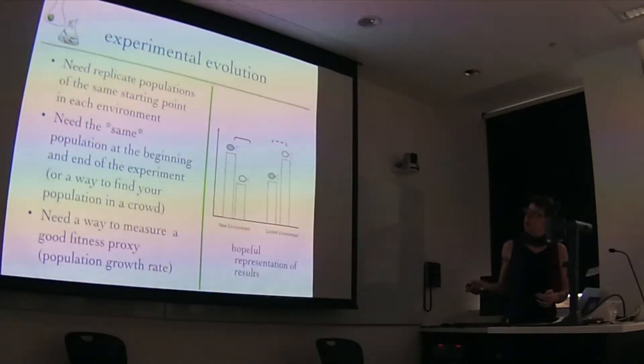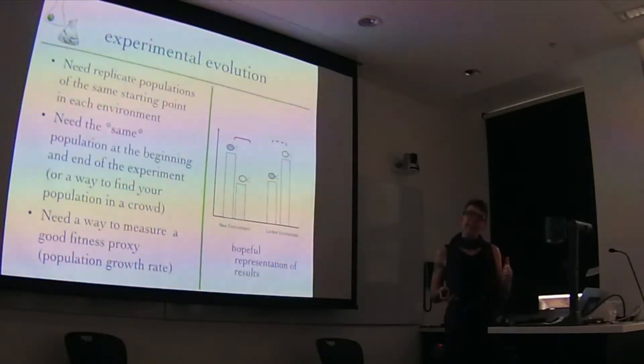So what do we need to do this? We need replicate populations with the same starting point, or we need a good argument for using different starting points and a way to account for it. We need the same population at the beginning and the end of experiments. So we need the population at the end of the experiment to be a descendant of the population at the beginning of the experiment.